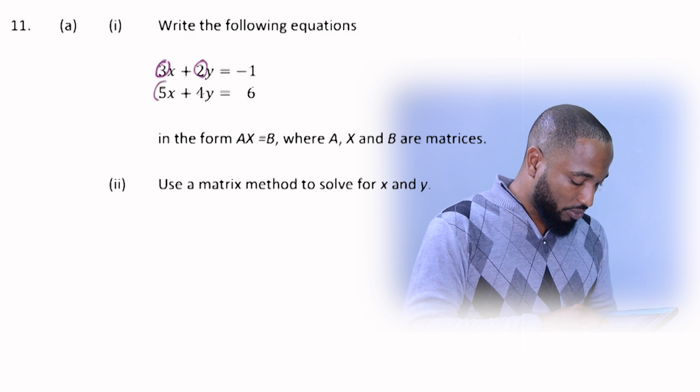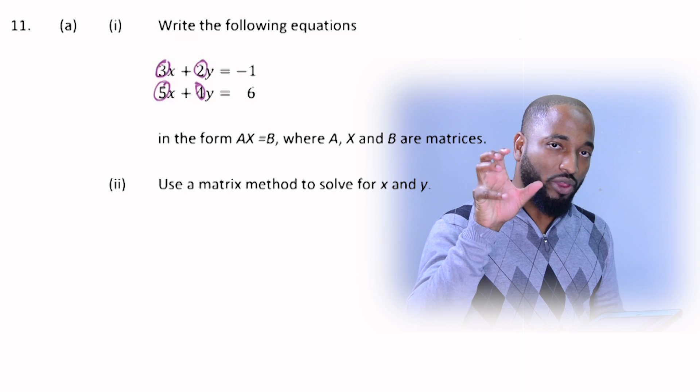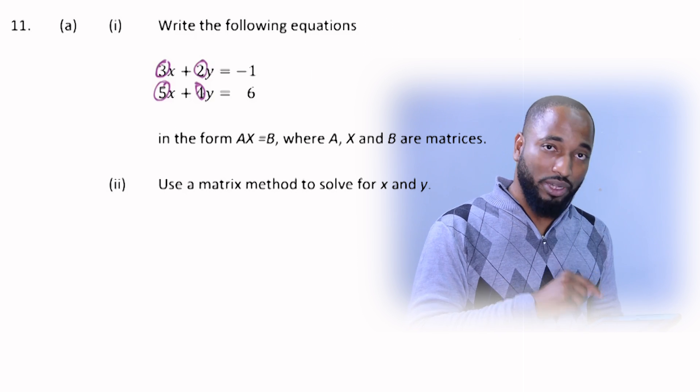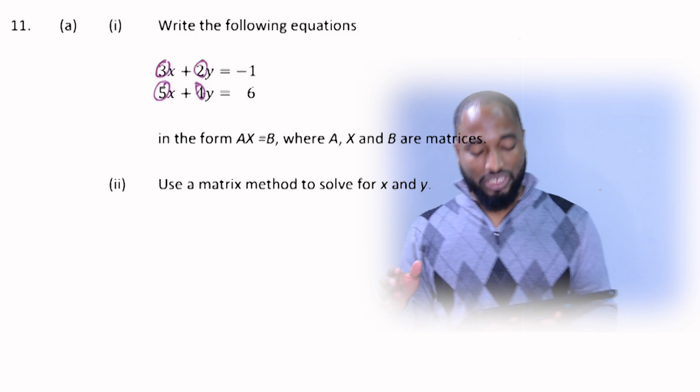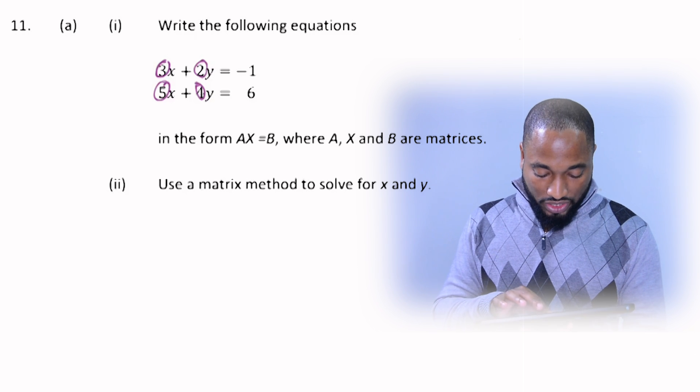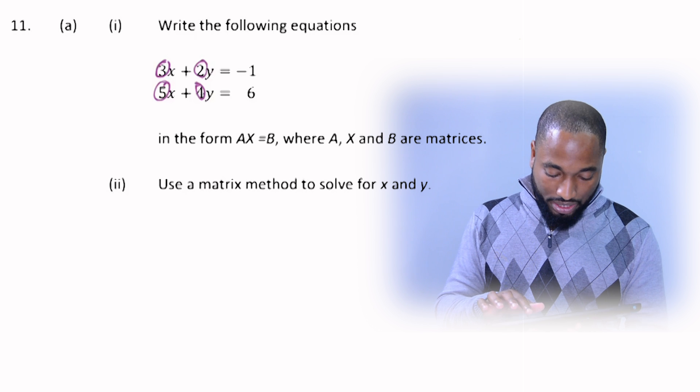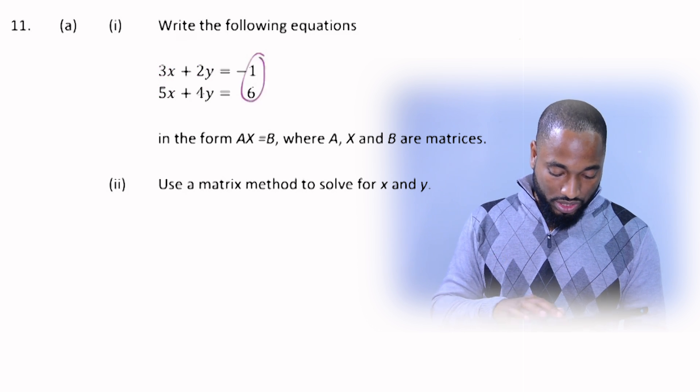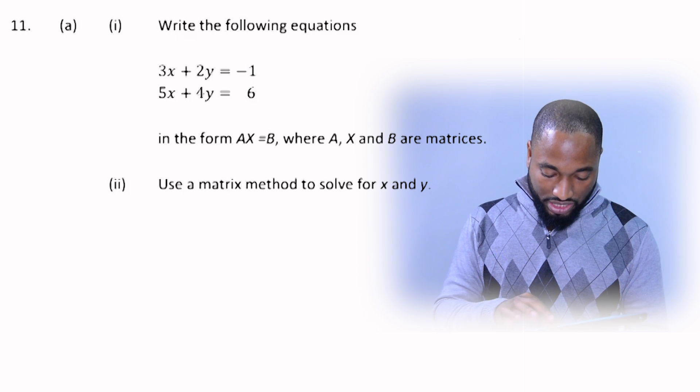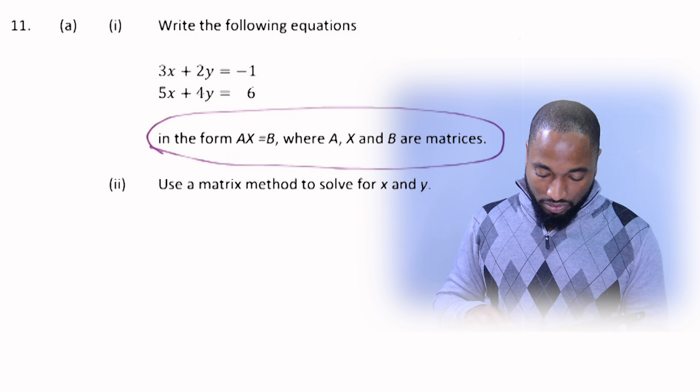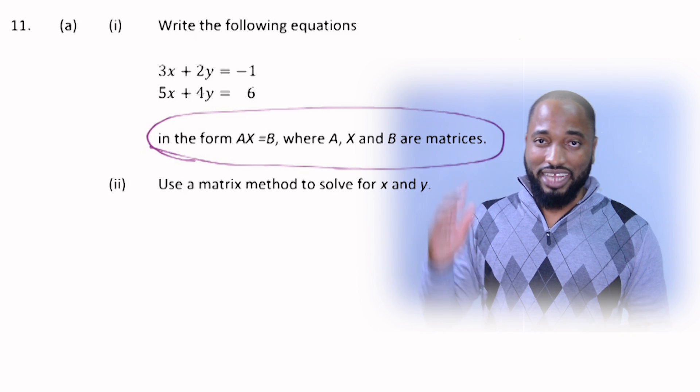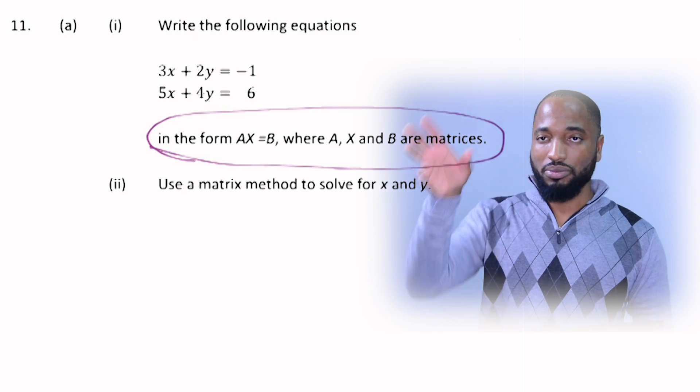These numbers here we're gonna rip them out and make a coefficient matrix which will be a two by two matrix. Coefficient because they are numbers in front of the letters. We'll use the x and y matrix, that's the variable matrix, and then we'll use these numbers out here. So the first part of the question is asking us to put the equations in the matrix form and that's a step.